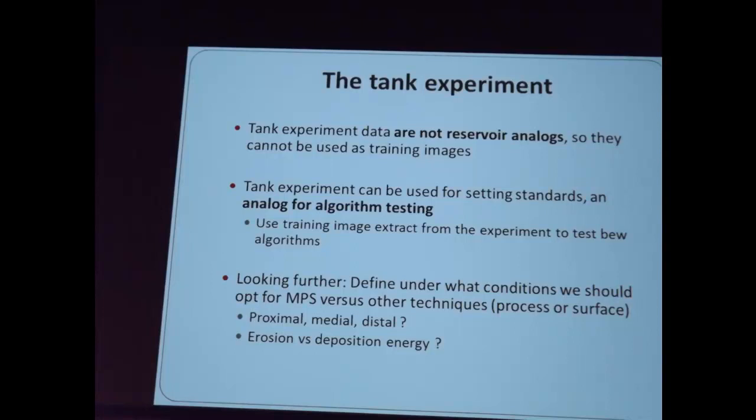Here's a tank experiment. You have a slice in this yellow lump, and if you zoom in you definitely see scour features and channel features in there, which you can extract and use as reference cases. Would you apply MPS on this particular case, or would you apply surface-based, event-based, or variogram-based techniques? Would they be good enough? Looking further ahead, we're going to use these experiments as standards to really define what technique works best in what particular geological depositional system. In distal systems, where everything is more deposition-oriented, we can probably use surface or boolean techniques. In proximal systems with high erosion energy, maybe variogram techniques work best.